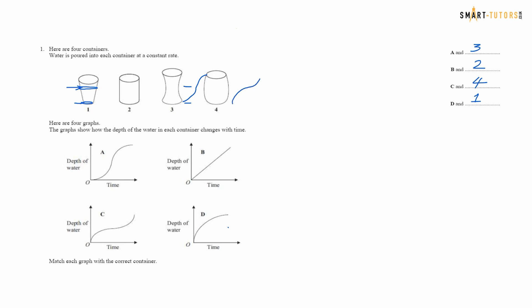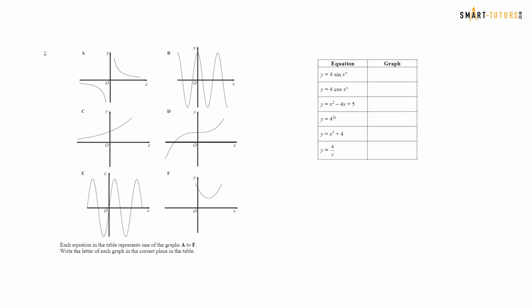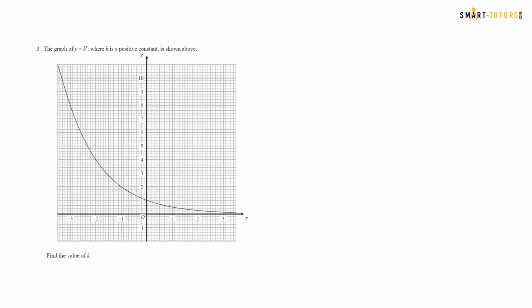Question number two: match graph types to equations. A trigonometric graph passing through the origin (0,0) is a sine graph — that's graph E. Cosine is graph B because cos(0) equals 1. The quadratic graph is F. The exponential graph y = 4^(2x) is graph C. The cubic function is graph D, and the reciprocal graph is graph A.